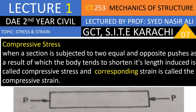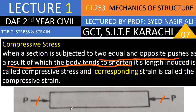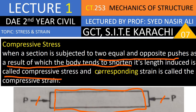This is the compressive stress. Here the direction of the forces has changed — two equal and opposite pushes. As you can see here, in tensile stress these forces are pulls, and in compressive stress these forces are pushes, equal in magnitude. As a result, the body tends to shorten — the length of the body is reduced. The stress induced is called compressive stress, and the corresponding strain is called compressive strain.